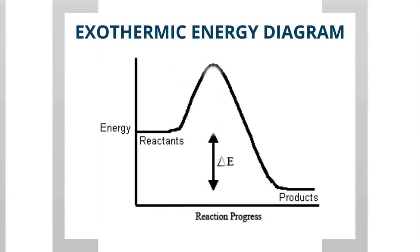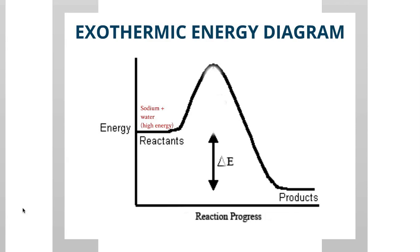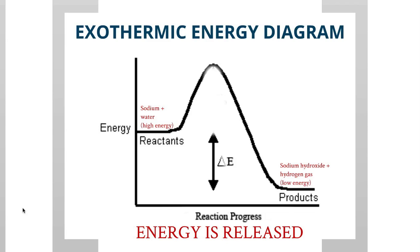Now let's look at the energy diagram for the exothermic process. The reactants — sodium and water — are at a high energy level. As the reaction progresses, it goes over the hump, and the products — sodium hydroxide and hydrogen gas — end up at the bottom, at low energy. Beginning at high energy and ending at low energy means energy was released into the surroundings, raising the temperature. That is why this is called an exothermic reaction.